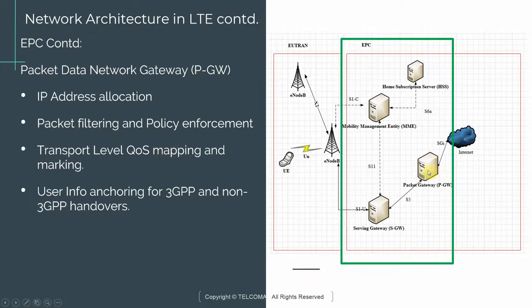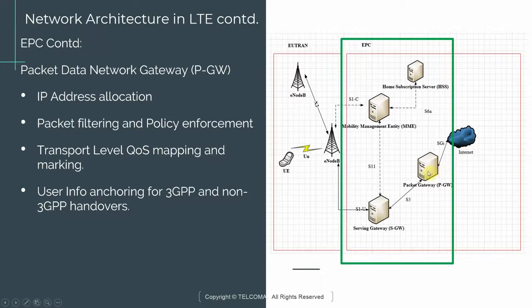The PGW keeps track of which data needs to be sent to which UE by filtering packets based on which UE is requesting which service. As packets arrive from the internet, the PGW knows their destination and ensures they make their way from the PGW to the SGW, to the eNodeB the UE is connected to, and then to the UE.